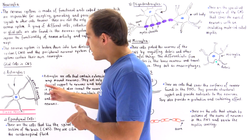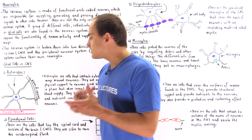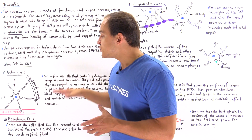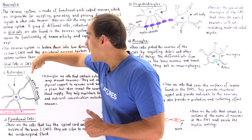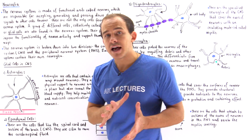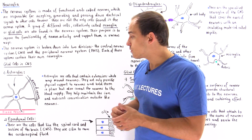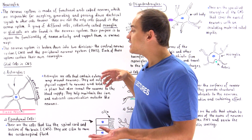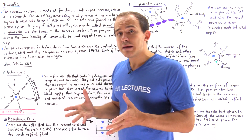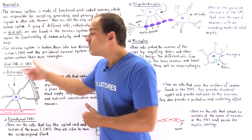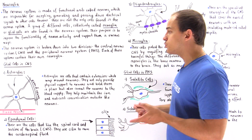Let's begin with the astrocyte. The astrocyte contains a cell body, a nucleus shown in blue, and other organelles. It also contains extensions that wrap around and connect to our neuron as well as blood vessels via gap junctions. The oxygen and nutrients such as glucose traveling through our blood can get to the neuron via these astrocytes. Astrocytes are also capable of providing physical support to neurons and they maintain the nutrient and ion concentration in and around our neuron.